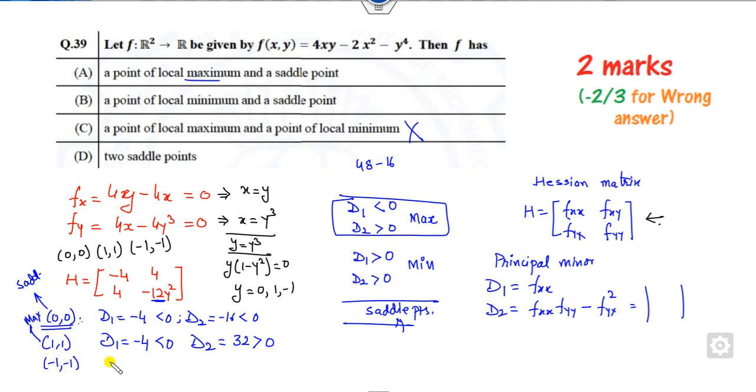Similarly, corresponding to (-1,-1), this is again minus 4, and this is again positive. So it has 2 maximum and 1 saddle point. The right answer is local maximum and the saddle point. So this is the general procedure.